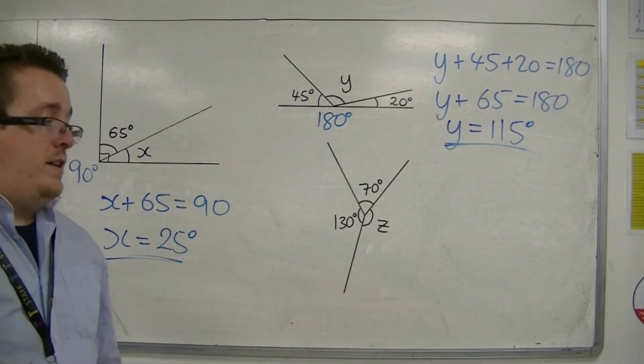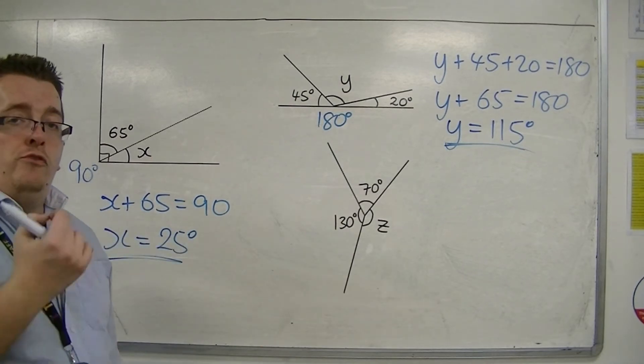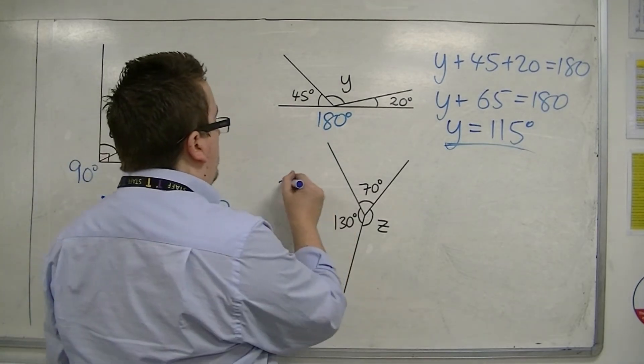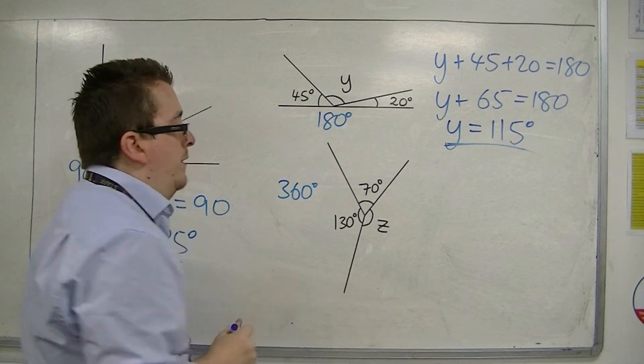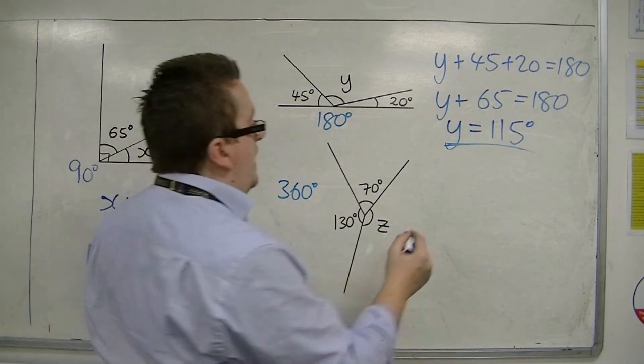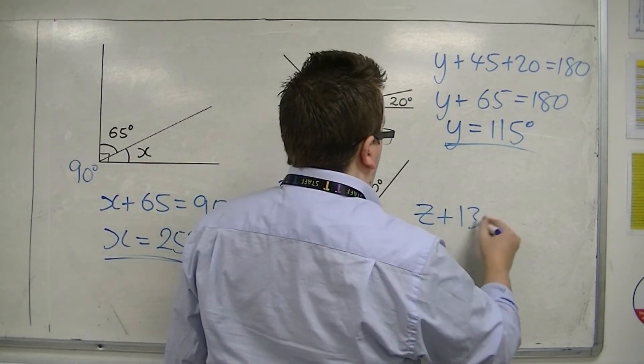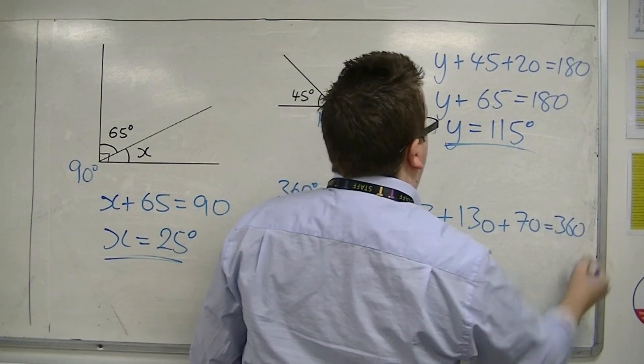And then in the third example, if you've got angles around a point, then they must add up to 360 degrees. So the three angles must add up to 360 degrees.